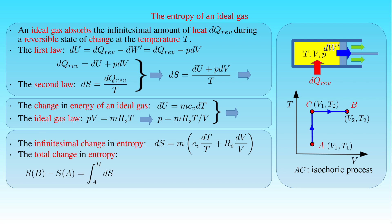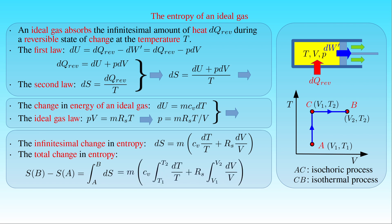The second process is an isothermal expansion, where the gas is brought from intermediate state C into state B while its temperature T2 is held constant and dT equals zero. As a result, we can break the integral into two terms: an integral along the path between states A and C, and another integral along the path between states C and B.